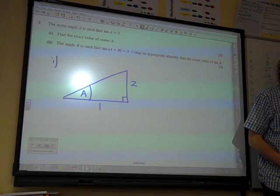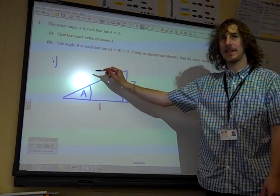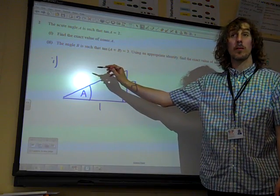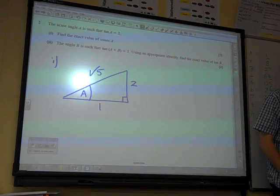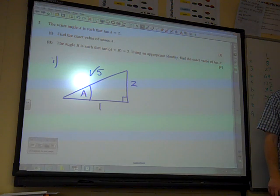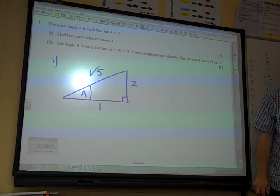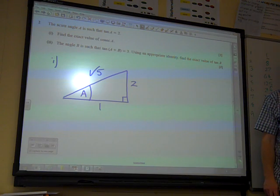If that's 2 and that's 1, then by Pythagoras' theorem, this side is root 5. Because it's 2 squared plus 1 squared, square root it. So that would be 4 plus 1 would be 5, square root 5. So that's the triangle in which there is an acute angle A such that tan A is equal to 2.